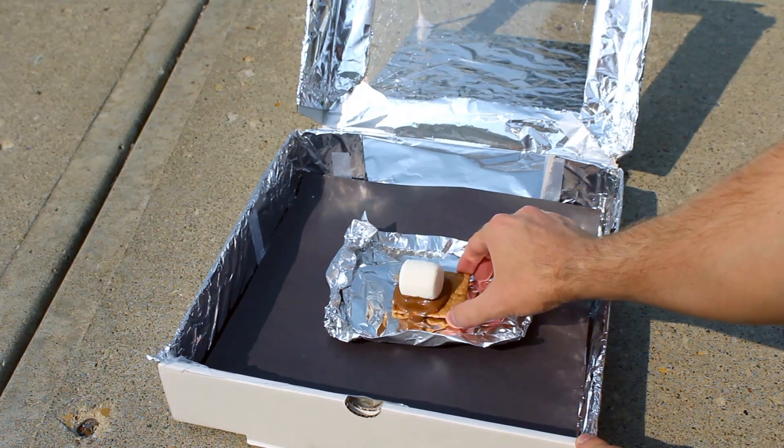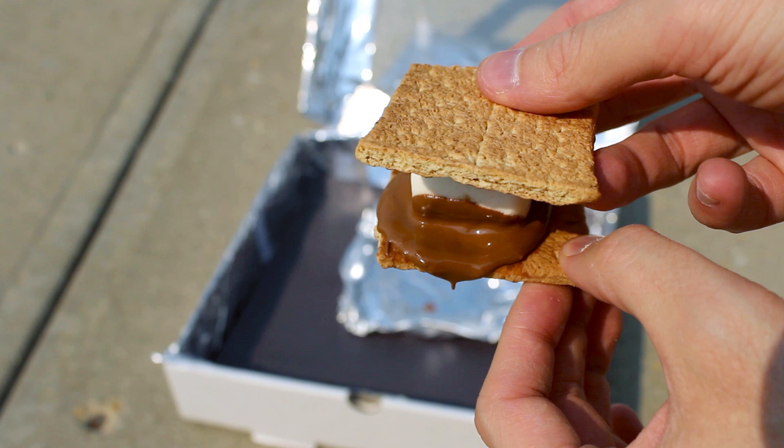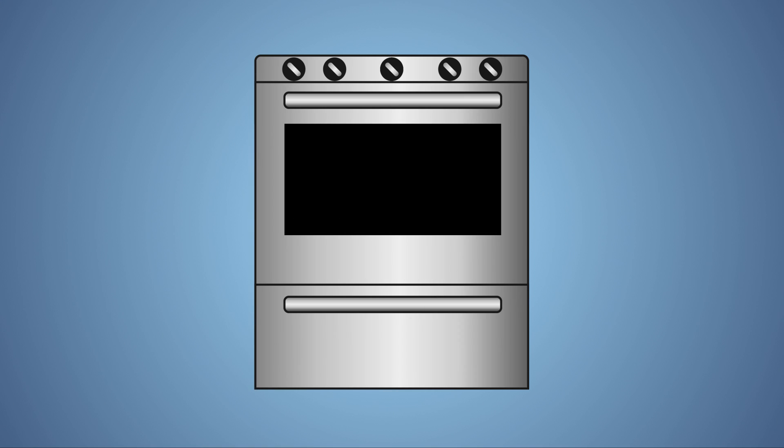Once your s'more is melted, remove it from the oven, grab a second graham cracker, place it on top, and enjoy. Let's look at this experiment a little closer.